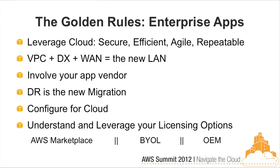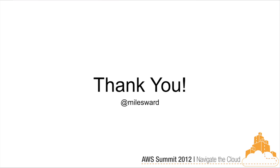From a golden rules standpoint, it really is possible to use cloud for secure, efficient, agile, repeatable deployments. VPC plus Direct Connect plus your WAN connections is the new LAN — that's the new network local to your business. The internet is how all your customers communicate with you and how your systems interconnect. Involve your application vendors — bring the builders of your big apps to the table. Make sure you're attending to configurations for cloud and understanding your licensing, from the marketplace option through bring your own license or OEM. Thanks for taking the time.